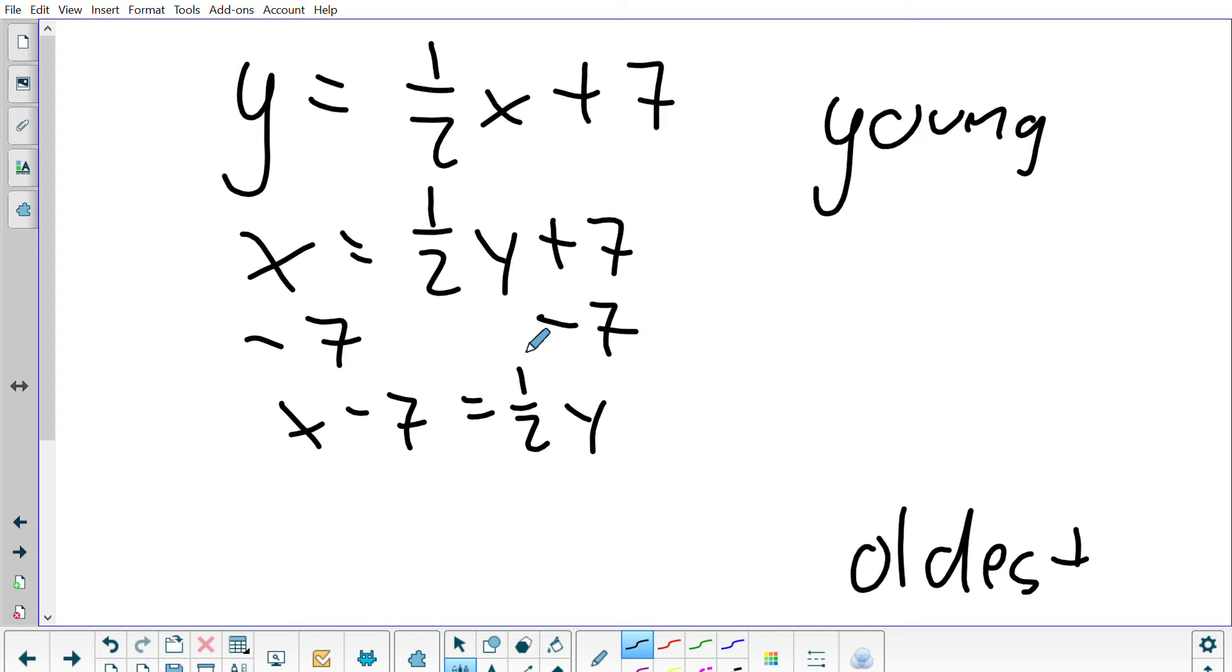To get rid of this fraction, I'm going to multiply everything by two. So now I have 2x minus 14 is equal to y. So the oldest you can date is twice your age minus 14.